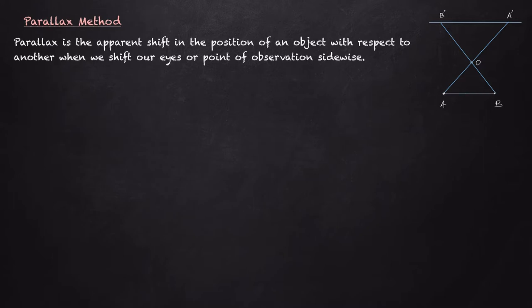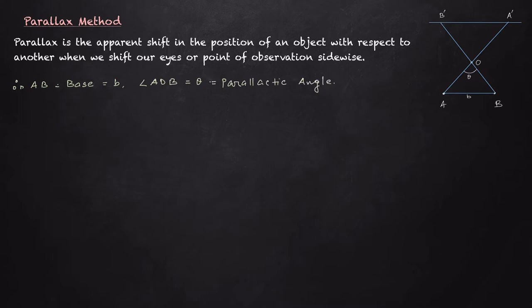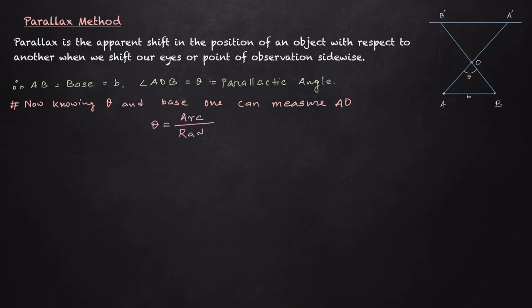The distance AB is called the base and is denoted by B. The angle formed between the two points of observation A and B is called the parallax angle and is denoted by theta. So AB is the base which equals B, and angle AOB equals theta, the parallax angle. If one knows theta and the base B, then one can measure the distance AO using the formula: theta equals arc over radius.